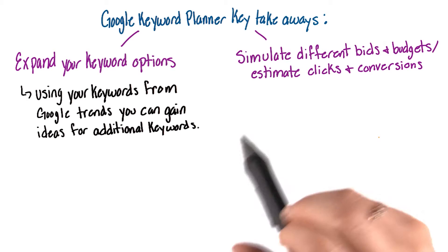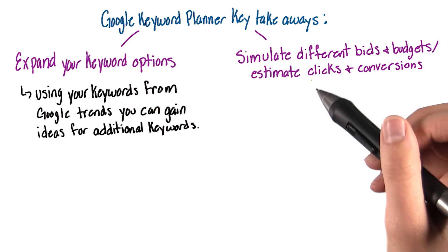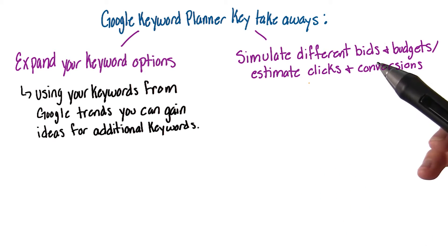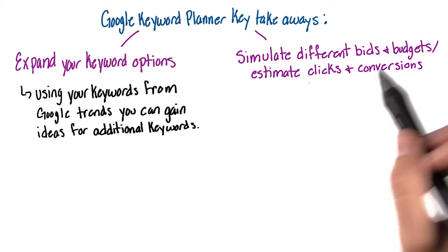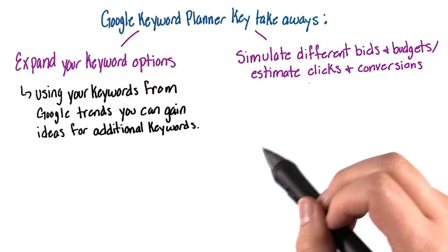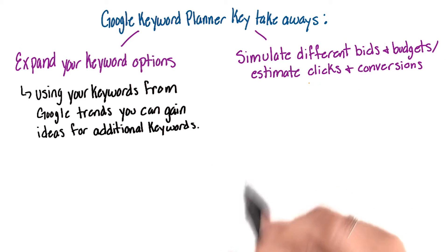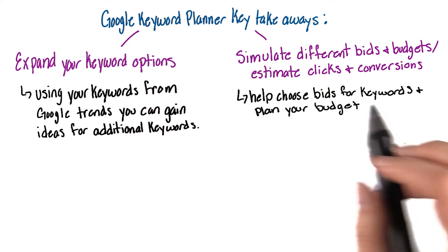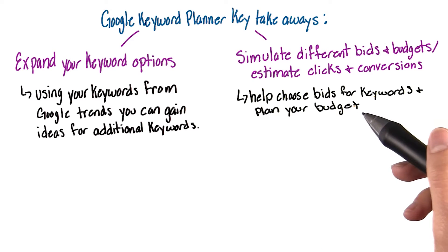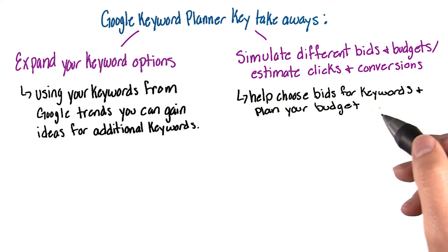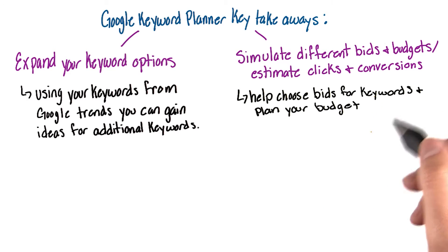Second, you can use it as a simulation for different bids and budgets, and learn what estimated number of clicks and conversions you might get from certain keywords. This will help you choose your bid on every keyword and plan your budget accordingly for your AdWords campaign.